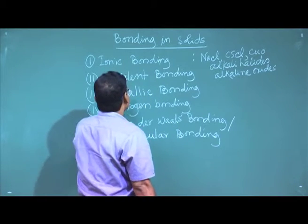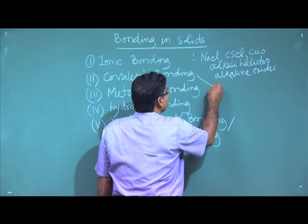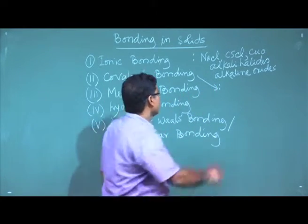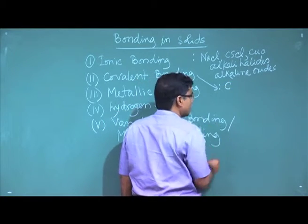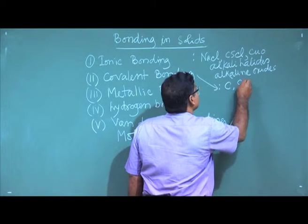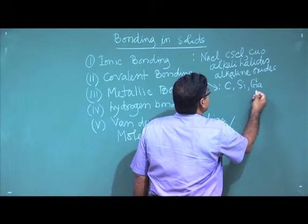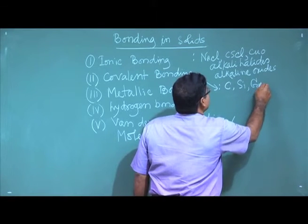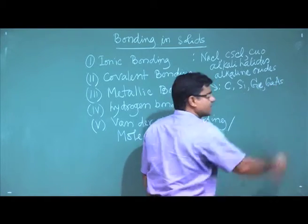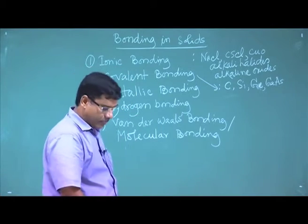For covalent bonding, we find it in diamond, which is basically carbon in diamond form, as well as silicon, germanium, and gallium arsenide. In these materials we see covalent bonding.